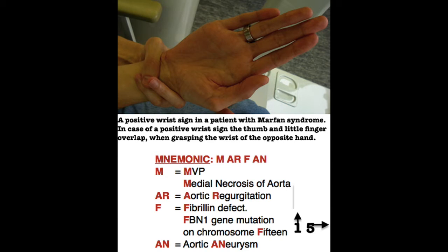Subluxation of the lens is also found in these patients, typically upward and temporally. To remember this, if you write 15 with arrows — as in chromosome 15 — it helps you remember that the subluxation of the lens is upward and temporal.